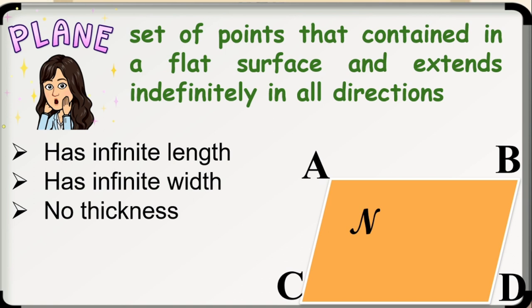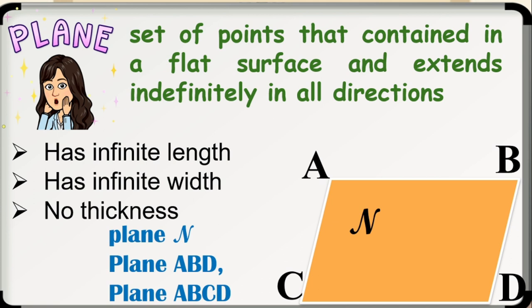A plane is drawn as a four-sided figure resembling a tabletop or a parallelogram. A plane is named by a single script capital letter, let's say this is plane N, or by at least three points in the plane which are not on the same line. So let's say this is plane ABD or plane ABCD. Moreover, a plane is like an infinite sheet of paper.